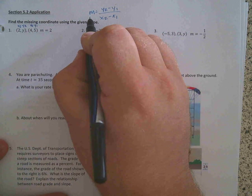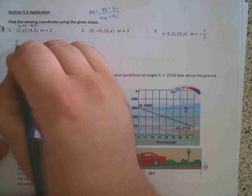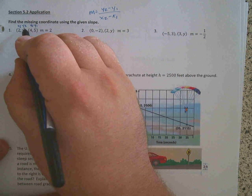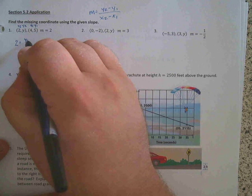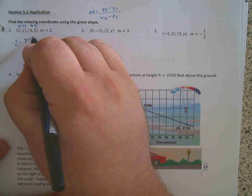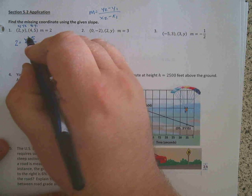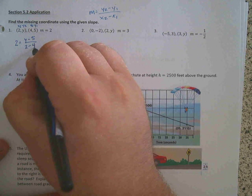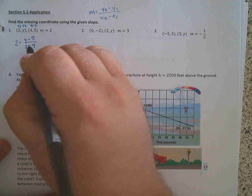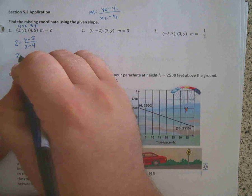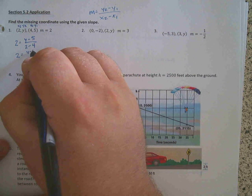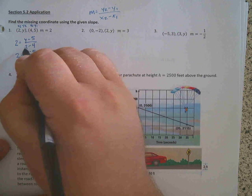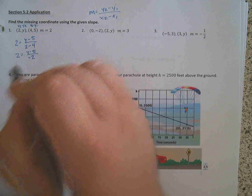Slope is 2, so I'm just going to replace the m with 2. So y2 is y minus y1 is 5 over x2 is 2 minus 4. I'm going to go ahead and simplify the bottom. So I have 2 equals y minus 5 over negative 2.